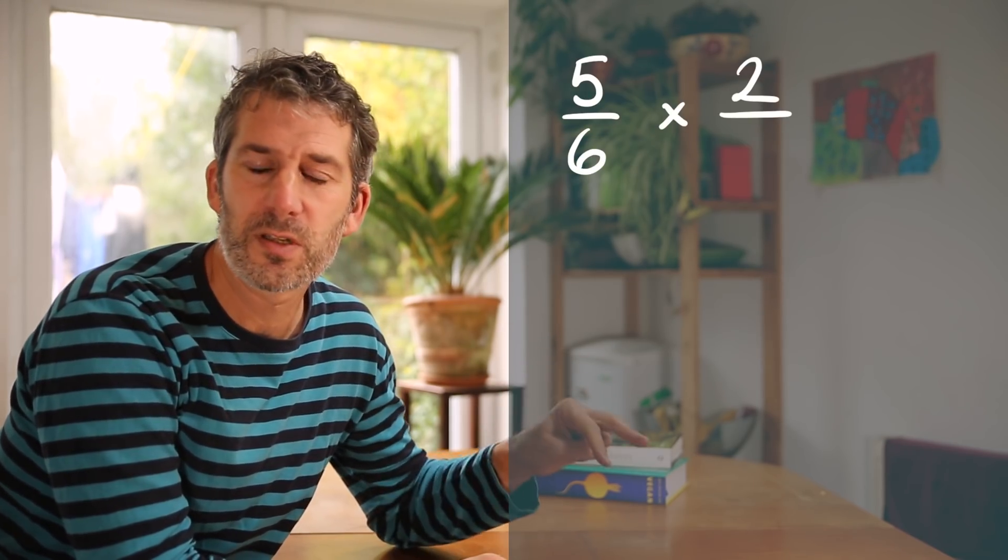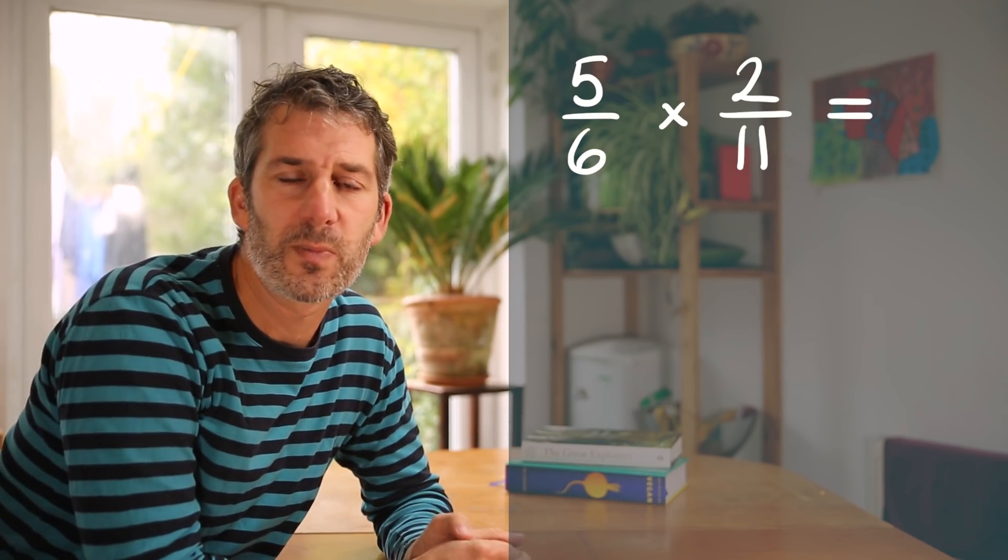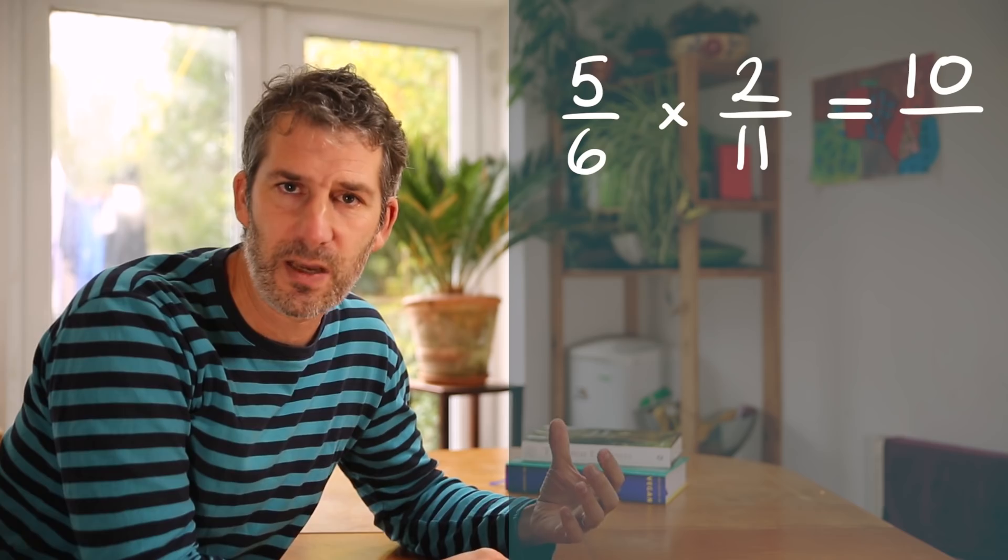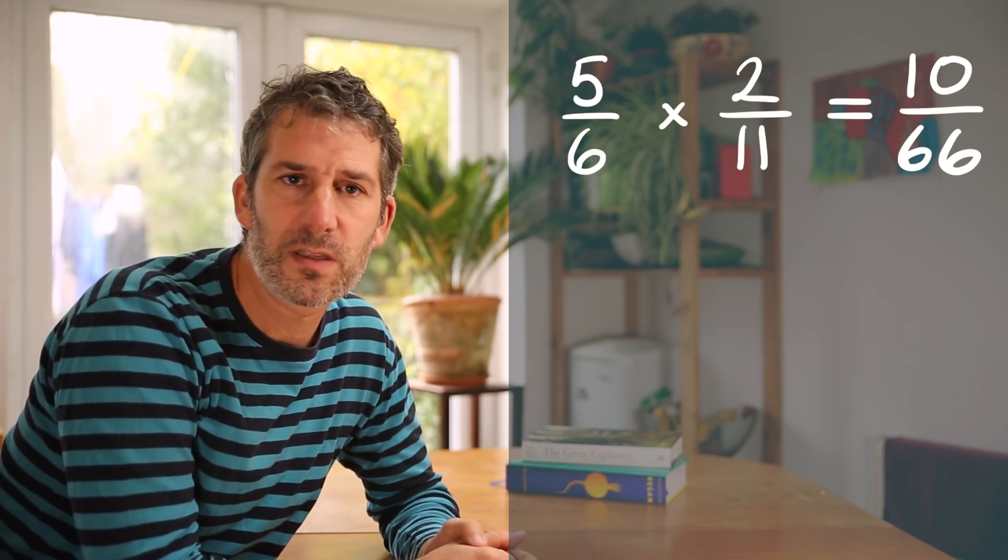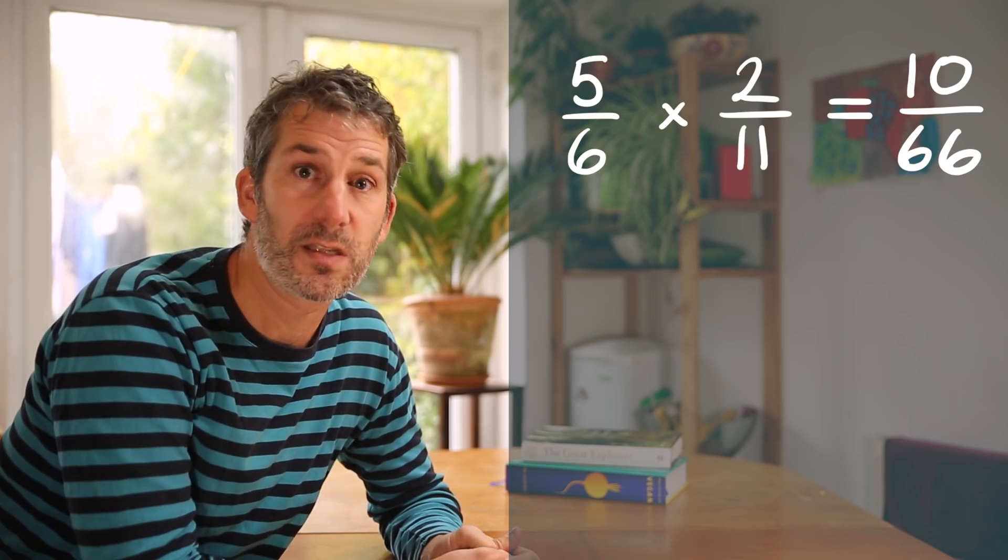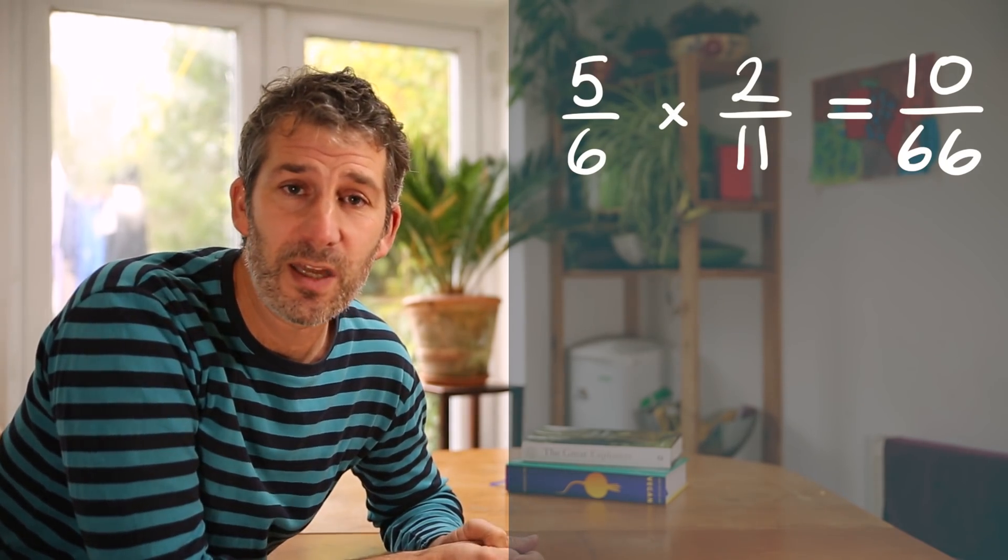All right. The last example. Five sixths times two elevenths. We multiply the numerators together. So five times two. And then we multiply the denominators together. So six times eleven, which is sixty-six. So five sixths times two elevenths is ten sixty-sixths. Which again could be simplified but we will leave that for another day.